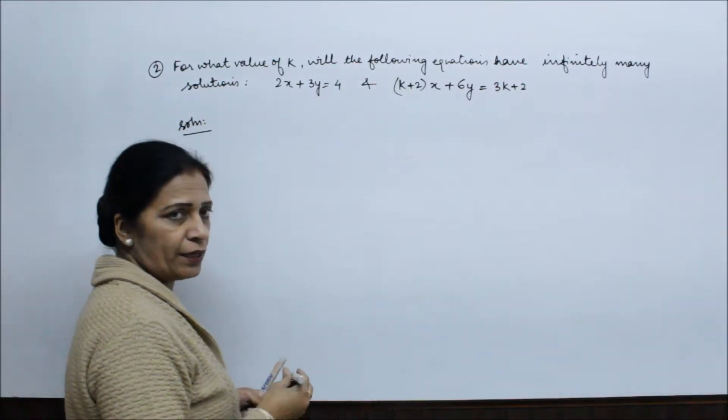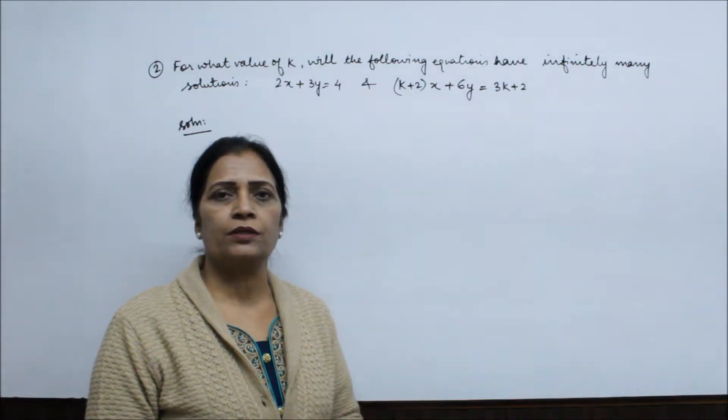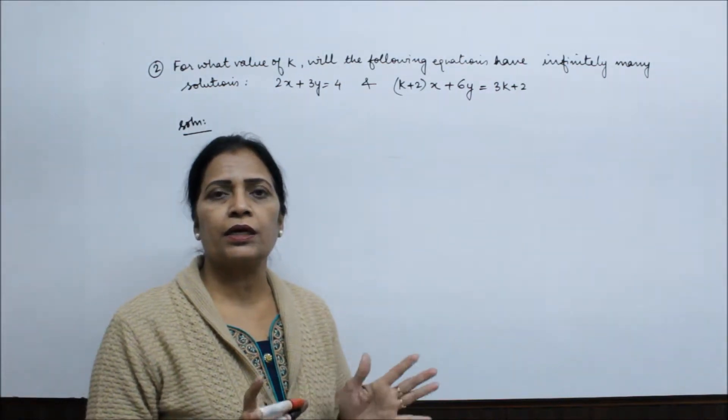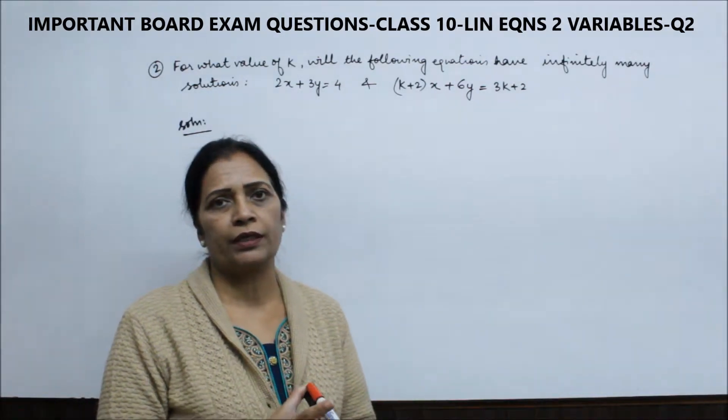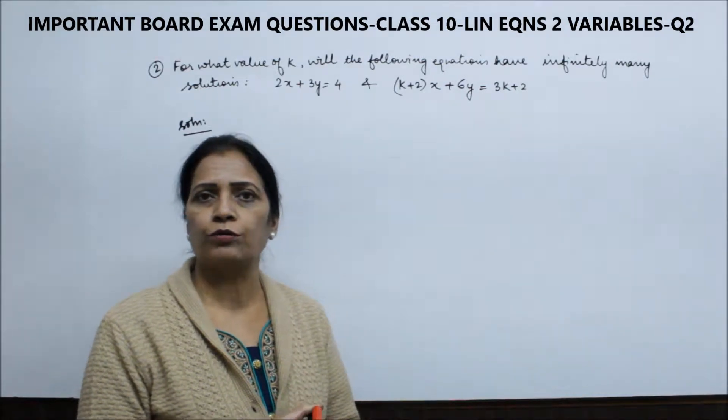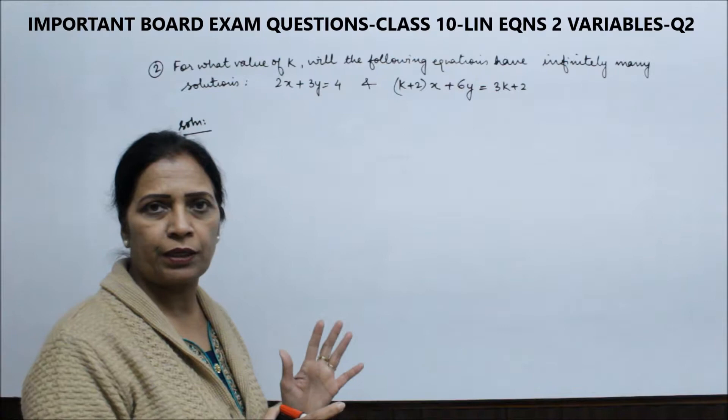First thing to note: the x, y terms and constants should be on the same side in both equations. If constants are on the right side, then in both equations constants should be on the right side. If on the left, then in both equations they should be on the left. We keep x and y on the left side.